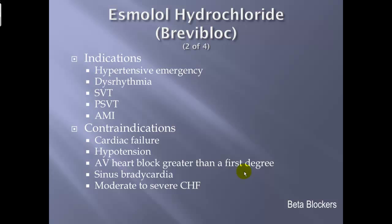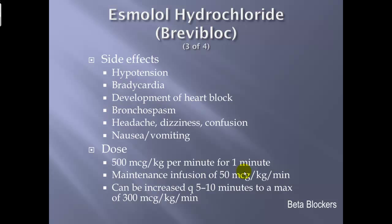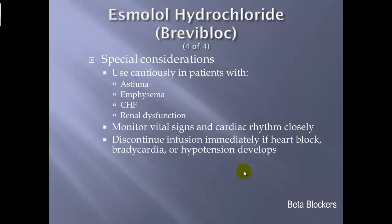Side effects of beta blockers: hypotension, bradycardia, development of heart block, bronchospasm (due to beta-2 blockade), headache, dizziness, confusion, nausea, and vomiting. Dose (esmolol): 500 mcg/kg/minute loading dose for 1 minute, then maintenance infusion of 50 mcg/kg/minute; can increase every 5 to 10 minutes to a maximum of 300 mcg/kg/minute. Special considerations: use cautiously in patients with asthma, emphysema, CHF, or renal dysfunction; monitor vital signs and cardiac rhythms closely; discontinue infusion immediately if heart block, bradycardia, or hypotension develops.